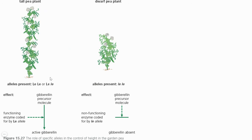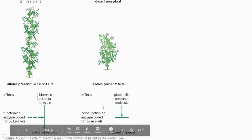In the tall pea plant, the gibberellin precursor GA20 gets converted into active gibberellin GA1, but for that the enzyme has to be produced — and this enzyme, which catalyzes GA20 to GA1, is only produced when there is a dominant allele. In the dwarf pea plant, because it has a recessive LE gene, the recessive genes do not express functional enzymes. They will produce an enzyme, but this enzyme will not be able to catalyze the reaction — it is a mutated enzyme.